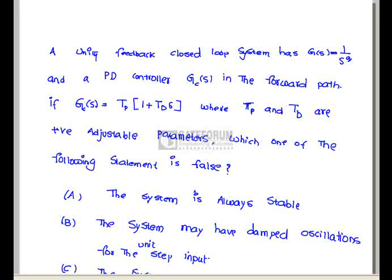Statement A: The system is always stable. In the forward path we have added a proportional derivative control, which adds a zero to the open loop system. Adding zero improves the stability of the system. So Statement A is true. Statement B: The system may have damped oscillations for the unit step input.